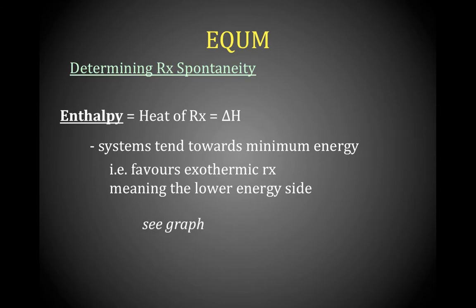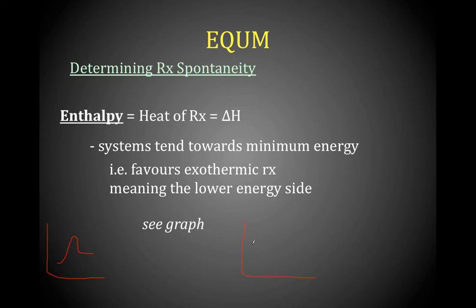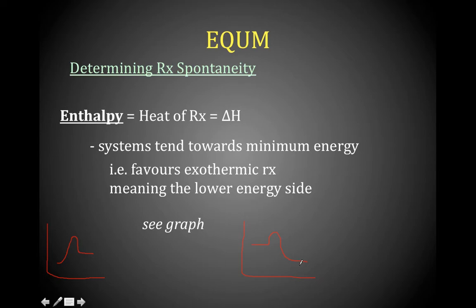Looking at a couple of potential energy diagrams: in the first case, the forward reaction is endothermic and the reverse is exothermic, so this favors the reactant side in terms of enthalpy because it's lower. In the second case, it's going to favor the forward reaction because the products are lower in energy — that's all we're saying.